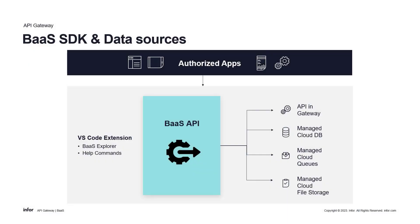InfoBus extends its capabilities through the BUS SDK with easy access to various data sources and APIs. You can connect to other APIs within the API Gateway, utilize message queues like SQS and Azure Queue, store and retrieve files using cloud file storage such as S3 buckets and Azure Blob Storage, in addition to managed cloud databases. InfoBus manages all of this infrastructure in one place to provide a seamless and unified experience.